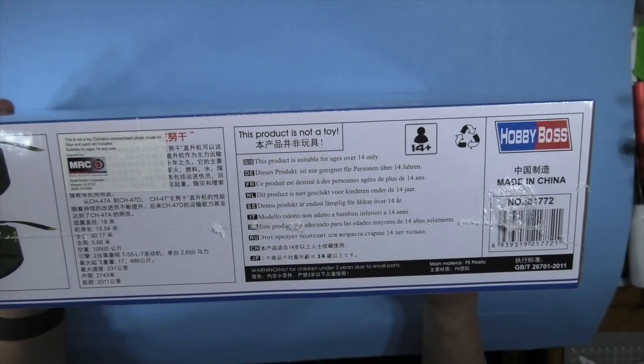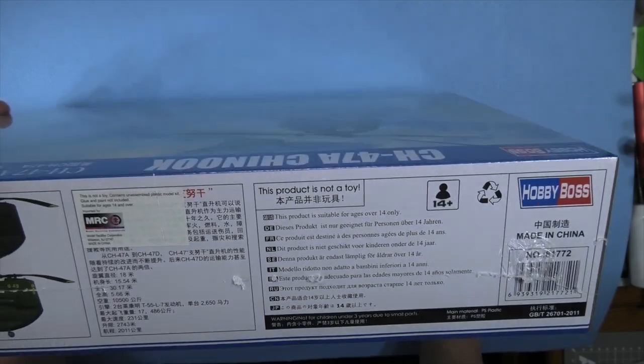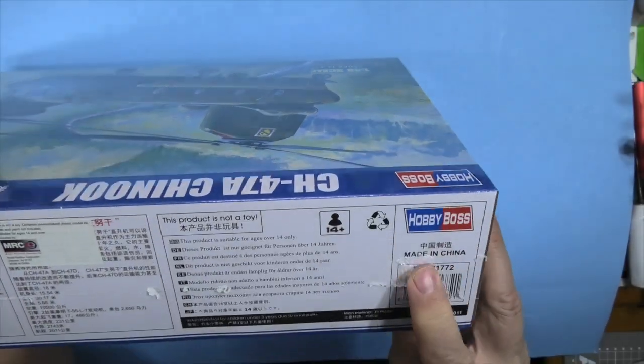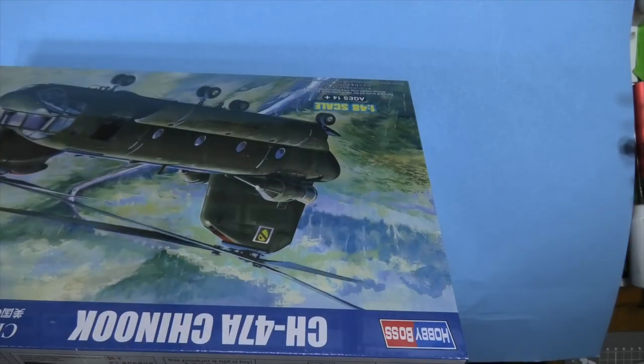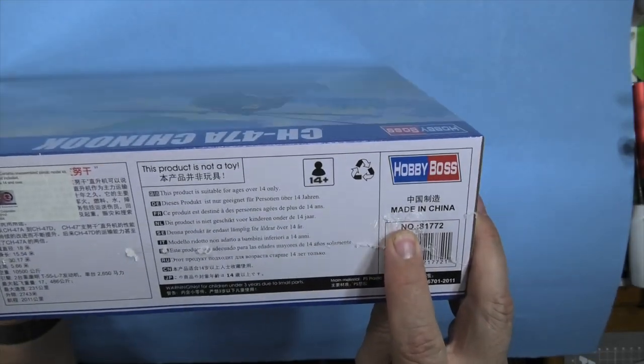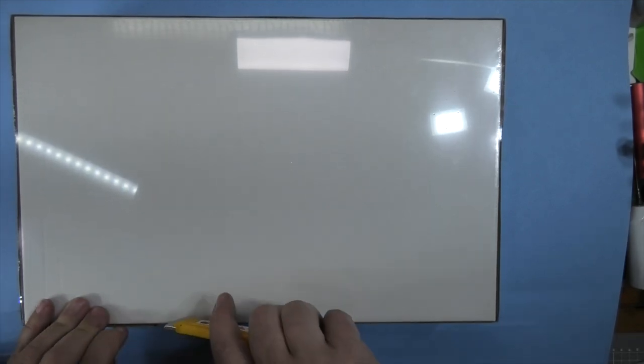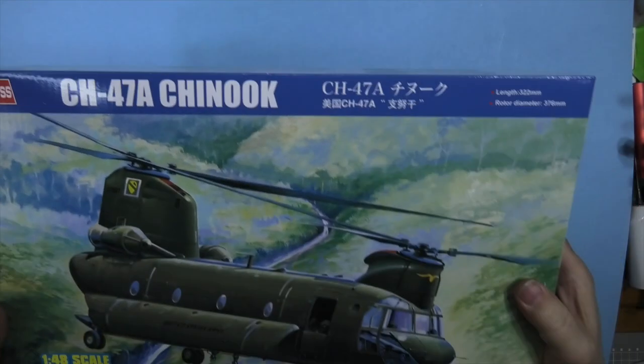This is not a toy, don't treat it as a toy. This is kit number 81772. We are going to remove the plastic to remove the glare and get started.